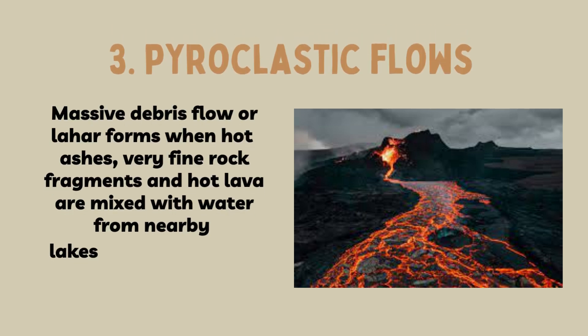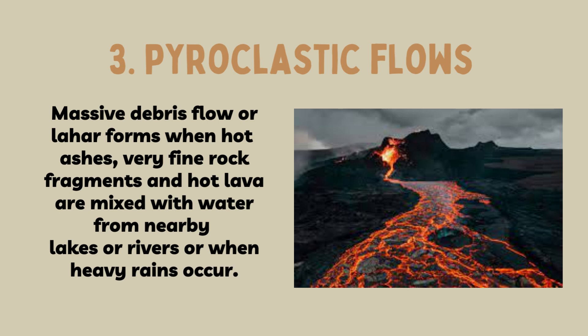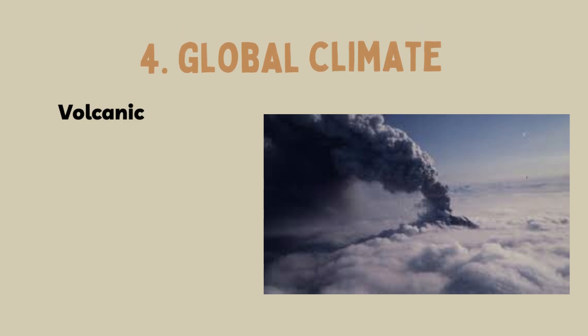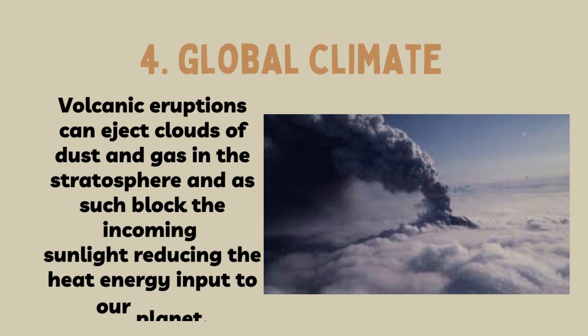Pyroclastic flows: massive debris flow or lahar forms when hot ashes, very fine rock fragments, and hot lava are mixed with water from nearby lakes or rivers when heavy rains occur. Eruption clouds occur when massive quantities of ash are ejected into the atmosphere where it can reach heights of 50,000 feet. Eruption clouds have proven to be very dangerous for aviation jets because the ash can shut down the engines. The ash cloud can also be very hazardous in terms of air pollution.